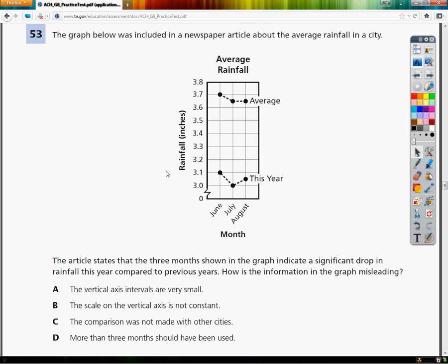The graph below is included in a newspaper article about the average rainfall in a city. So on the bottom, we're talking about months, so June, July, and August, and then the rainfall would be in inches.